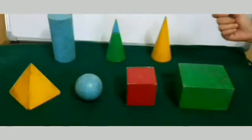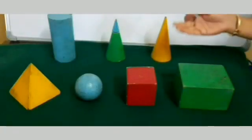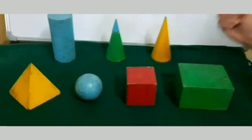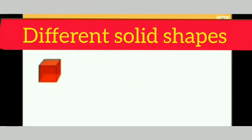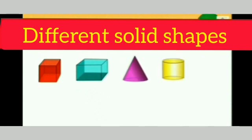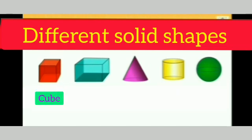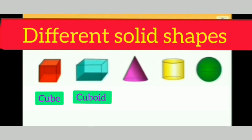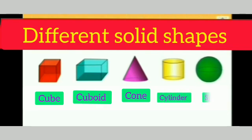Students, you might have seen such type of solid shapes in the math corner of your school. Come, let's get some information about them. Here we have certain solid objects which are visible to you and their names are cube, cuboid, cone, cylinder and sphere.